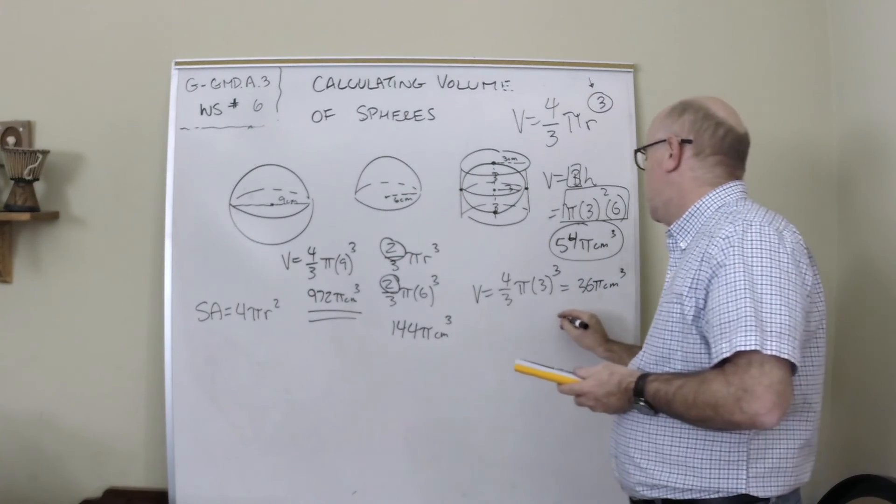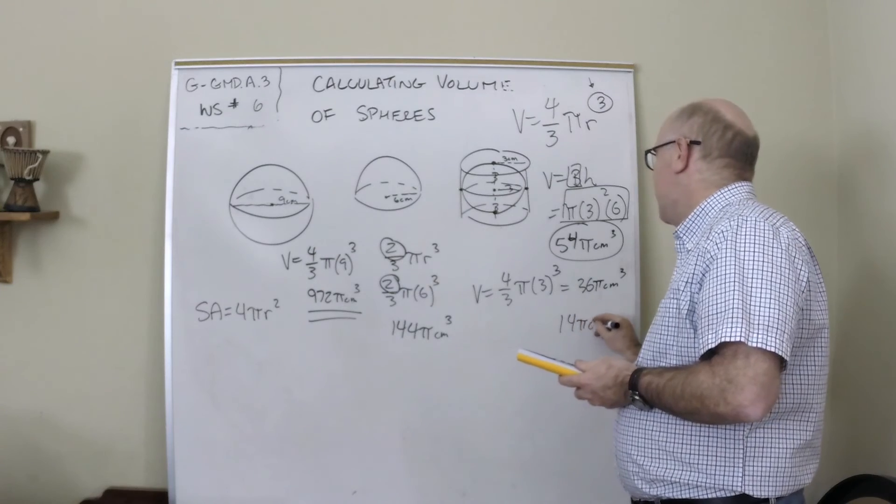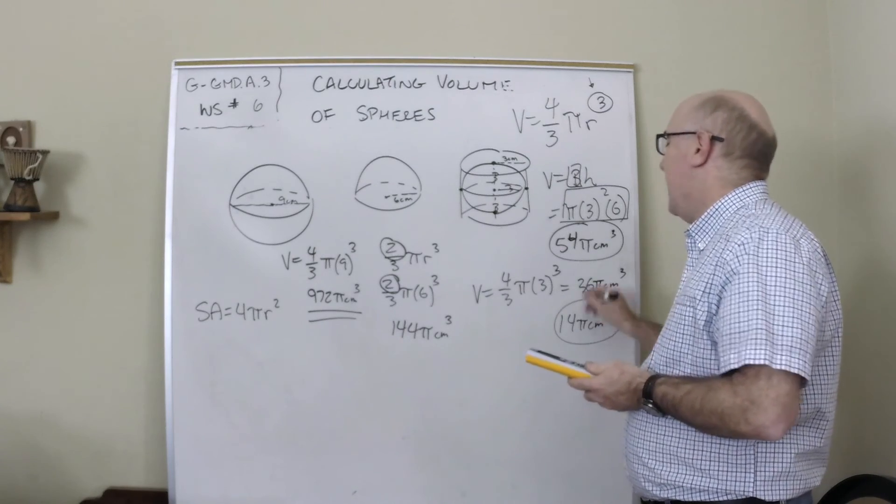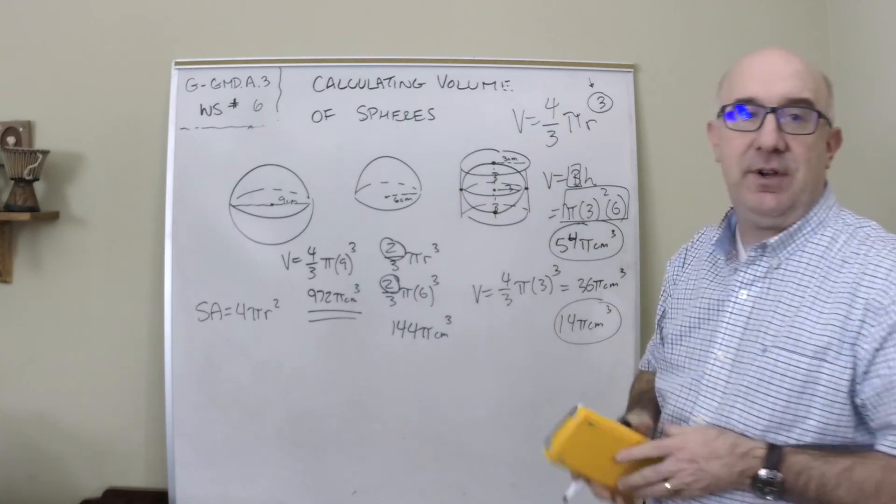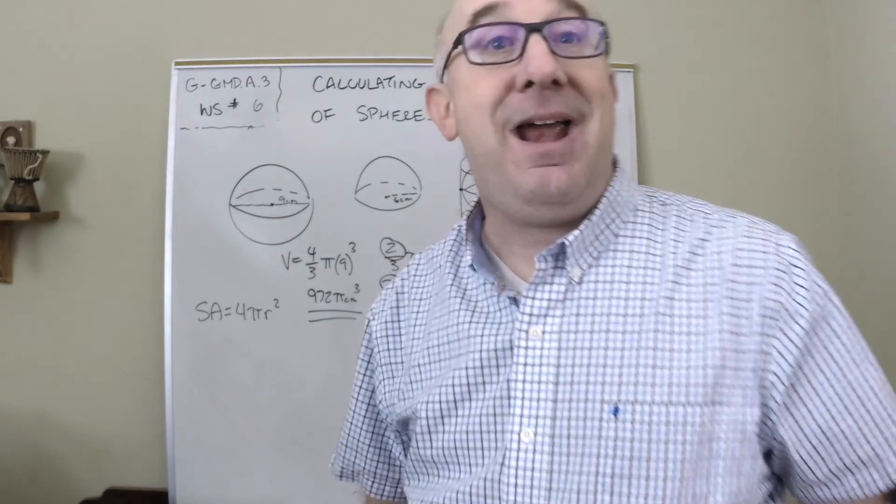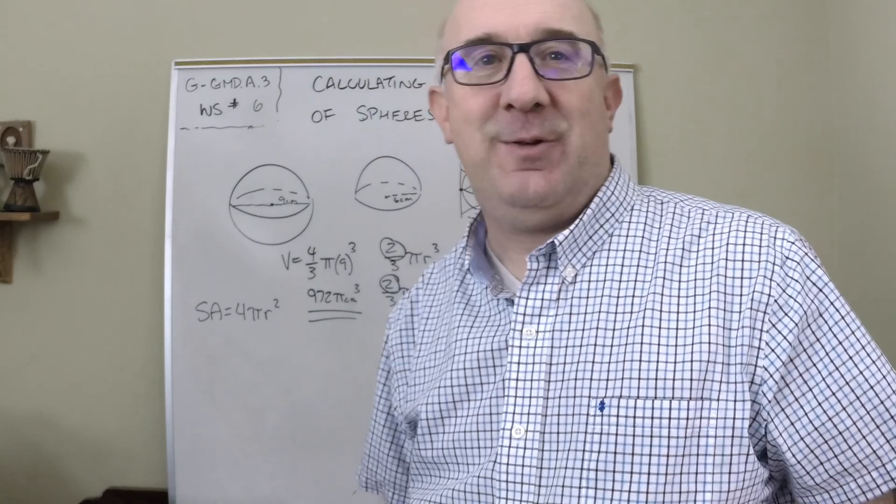We get 14π centimeters cubed, which is the air, because I take the full volume and subtract the sphere. What's left is air. Anyways, hopefully that helps.